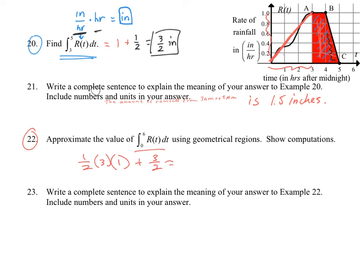And if I add those two together, I'm going to get 3. So in other words, the amount of rainfall that fell from midnight to 3 is going to be the same as the amount of rainfall that fell from 3 to 5.